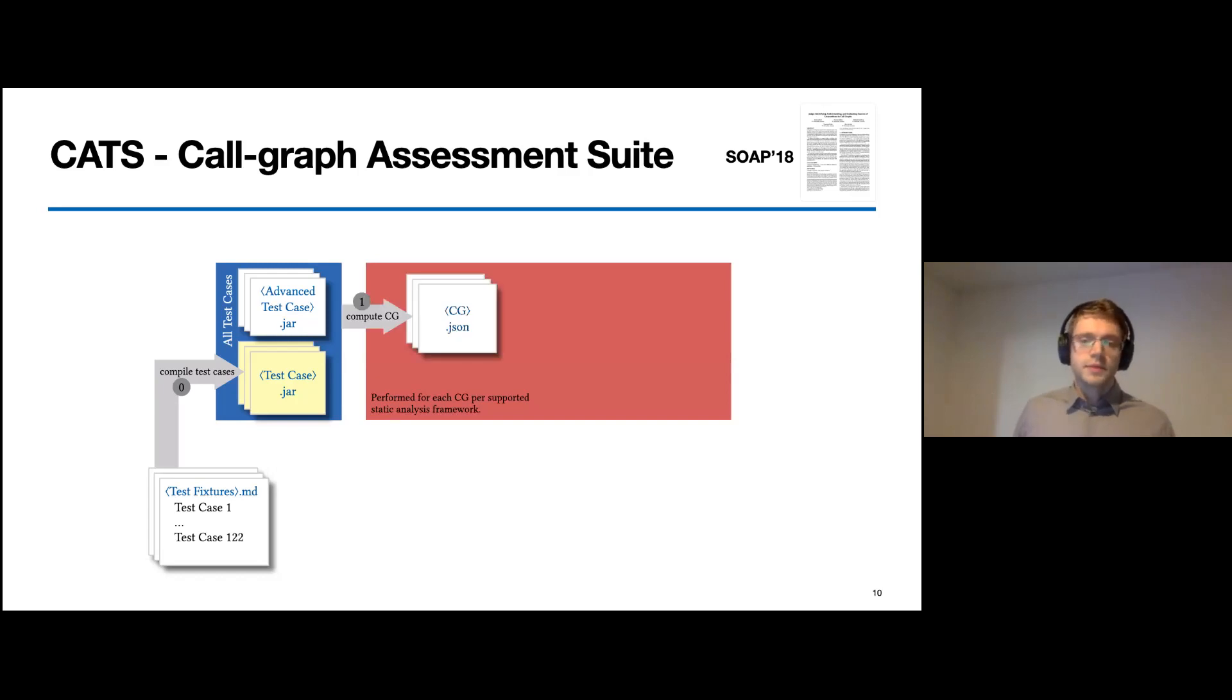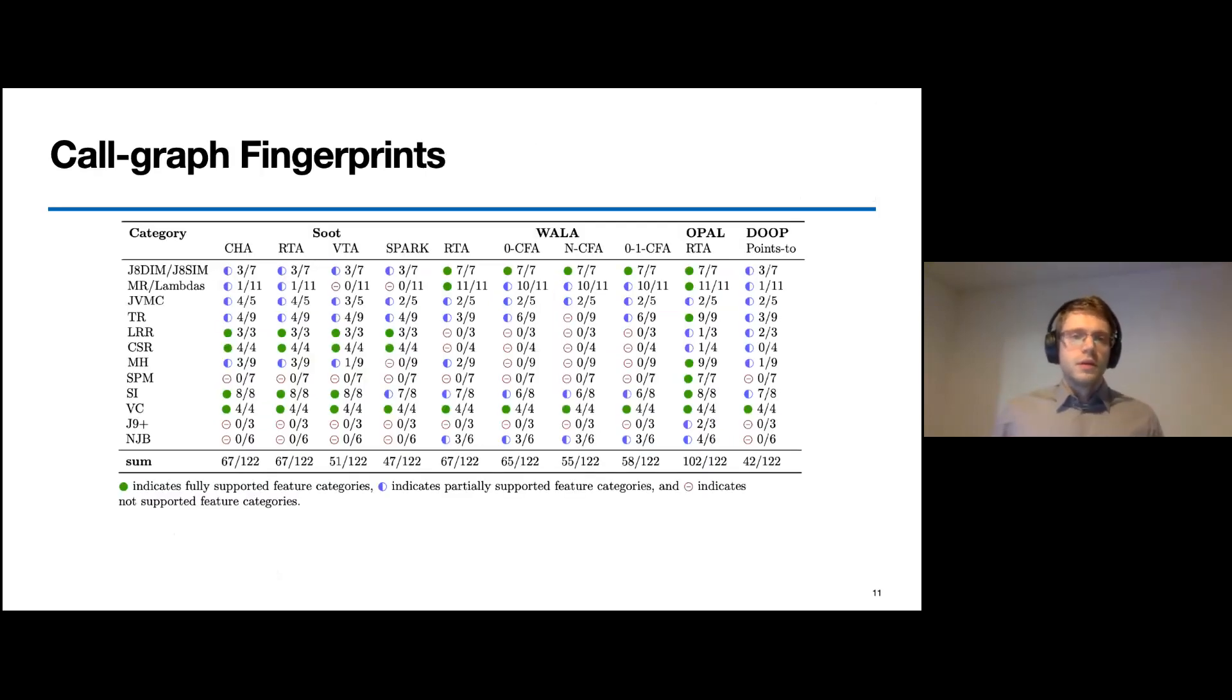We also provide an interface which allows us to run the test cases against arbitrary call graph algorithms. As a result, we can obtain one call graph per test case. We can now check whether the call graphs contain all expected call edges that were specified in the respective test case. When we combine all the test results for one particular algorithm, we obtain an algorithm fingerprint stating the features it supports.